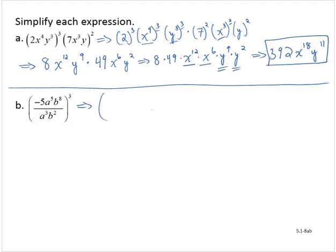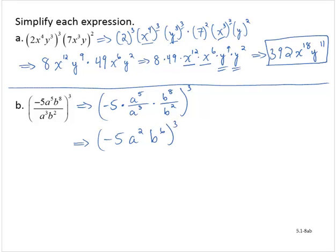Working within the parentheses, I have negative 5 times a to the fifth over a to the third, times b to the eighth over b to the second, and that's all being raised to the third power. Using the quotient rule for exponents, I now have negative 5, a to the second, b to the sixth — I subtracted the exponents. Now I have a product to a power, so I have negative 5 to the third, a to the second to the third, and b to the sixth to the third.